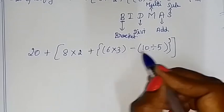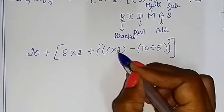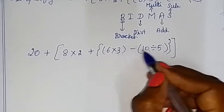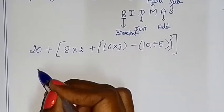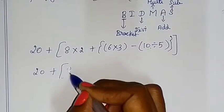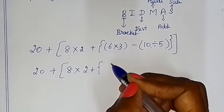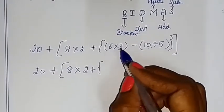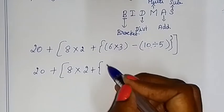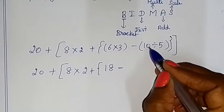To solve this, we work on the inner bracket first — the two brackets are parallel, so we take the innermost one. So: 20 plus, square bracket open, 8 into 2 plus curly bracket open. Now solve the round bracket: 6 into 3 is 18, minus 10 divided by 5 — that gives 2.